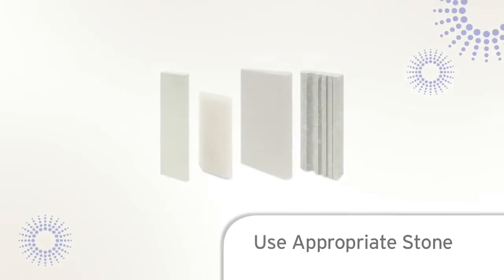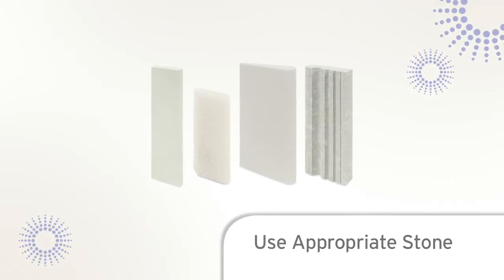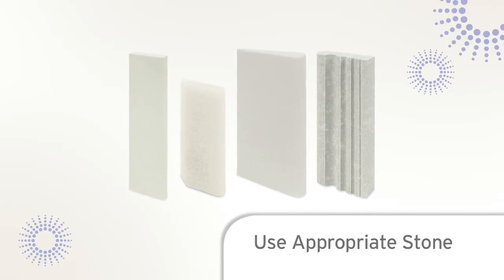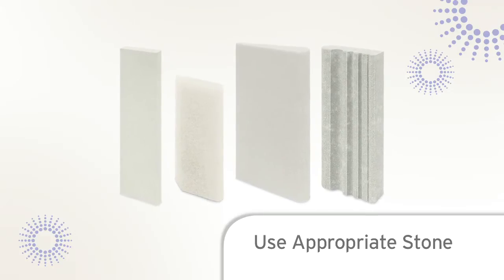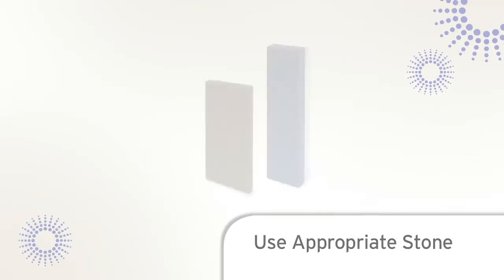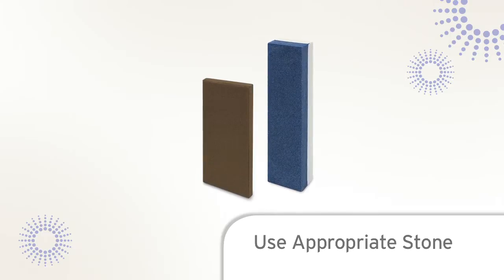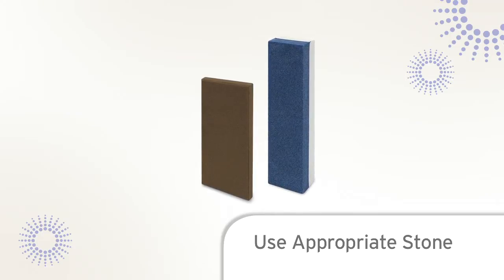It is essential that the proper stone is used to accomplish the sharpening task. Light routine sharpening can be accomplished with a stone that has a fine grit, such as an Arkansas stone. Instruments that are very dull will first require sharpening with a coarser stone to establish an edge and are finished with a finer grit stone.